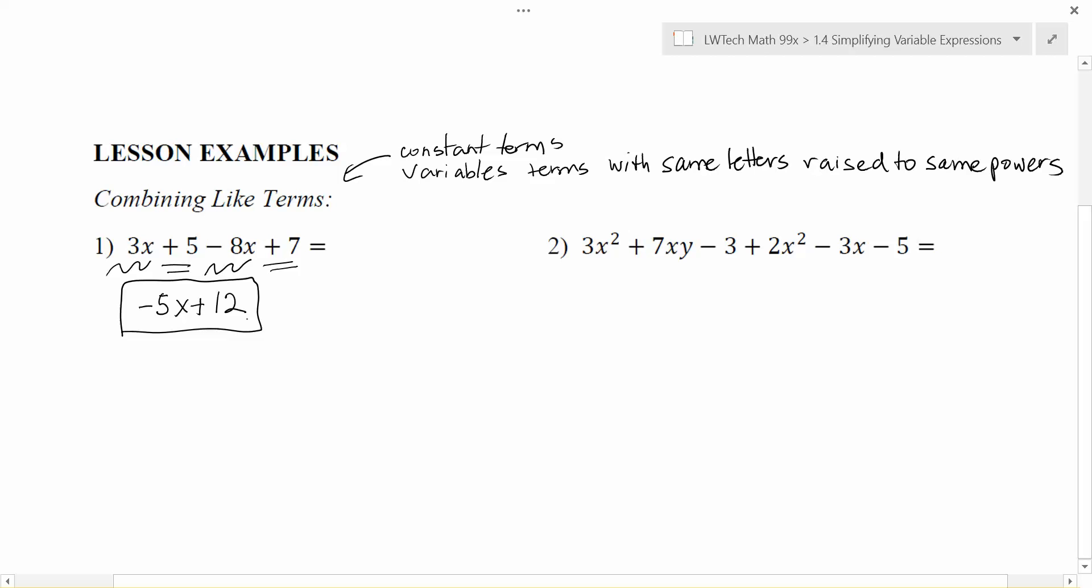With this other example here, notice we have x's and we also have y's. Here we have an x and a y together, and that's fine. We would like to put together as many of these terms as we can, so we look for like terms. Here I have a 3x squared, and if I glance through, I notice I have another x squared term here. So like terms need to have the same variable with the same power.